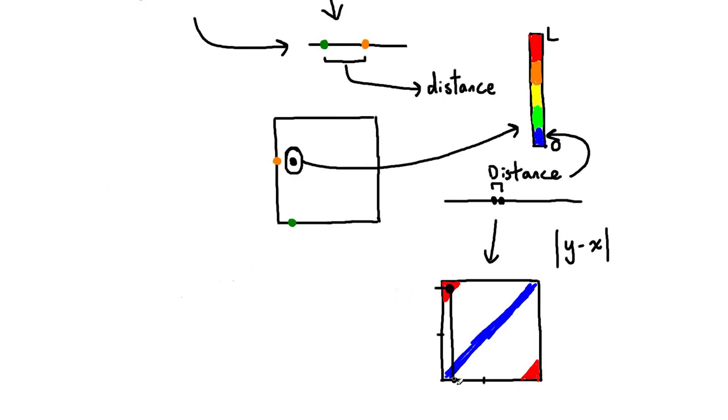We also know that the top left and bottom right corners will be colored red, because points in this region have a very low x coordinate and a very high y coordinate, or the other way around. So the distance between those two points will be quite high,